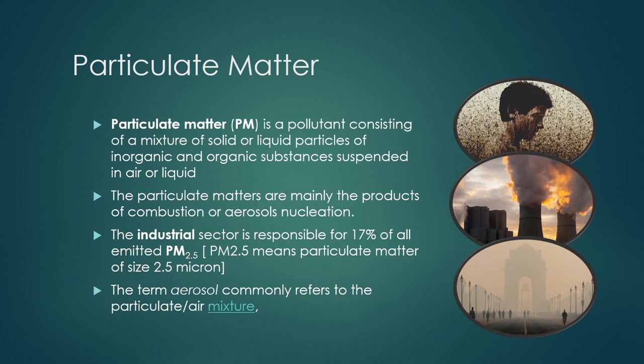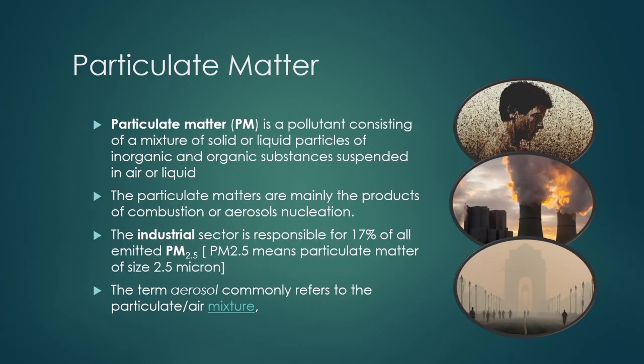In power plants, burning coal produces steam or gaseous products from which power or electricity is generated. When coal is burnt, very fine particulate matter comes out as ash — very fine particles floating and coming out from the chimney — going to the atmosphere as carbonaceous particles or other small fine particles.